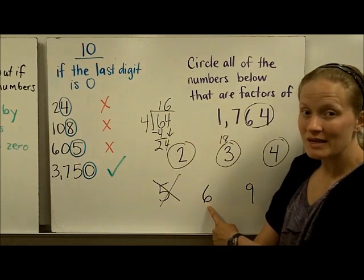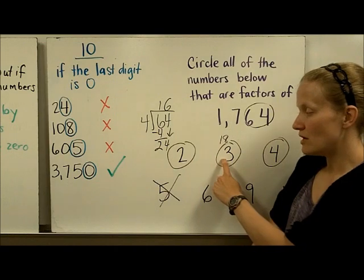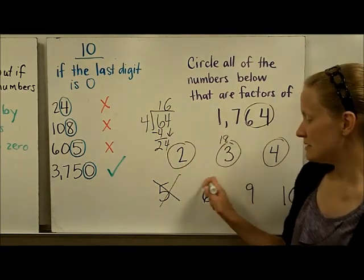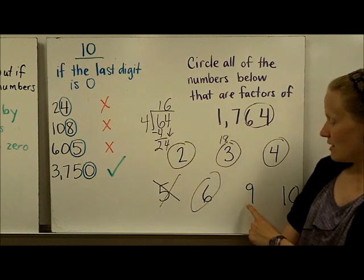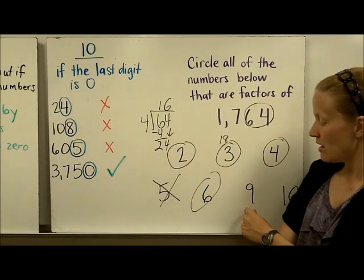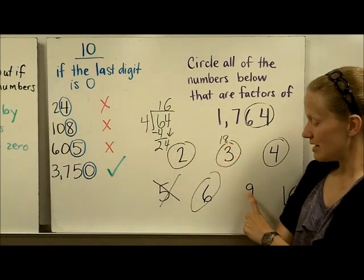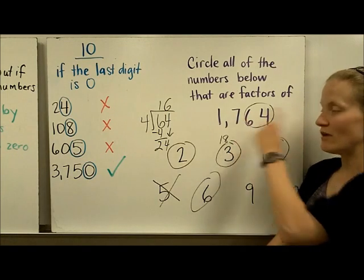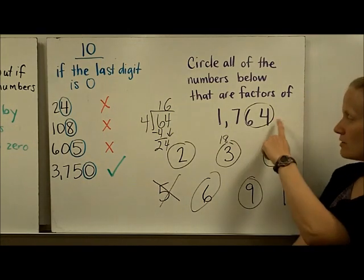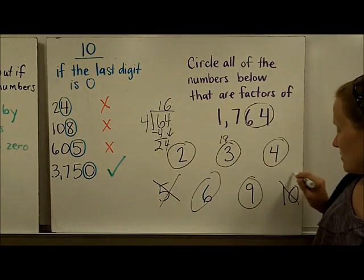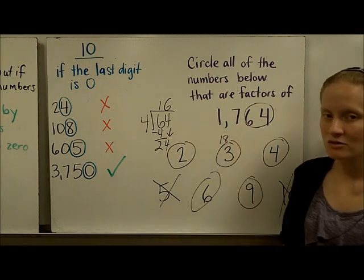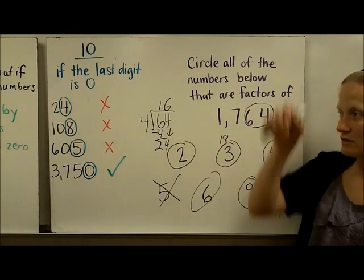For 6: since both 2 and 3 are already confirmed as factors, 6 is also a factor. For 9: we already found the digit sum is 18, and 18 is a multiple of 9, so 9 is a factor. For 10: the number does not end in a 0, so it is not divisible by 10. Therefore, 2, 3, 4, 6, and 9 are all factors of this number, 1,764.